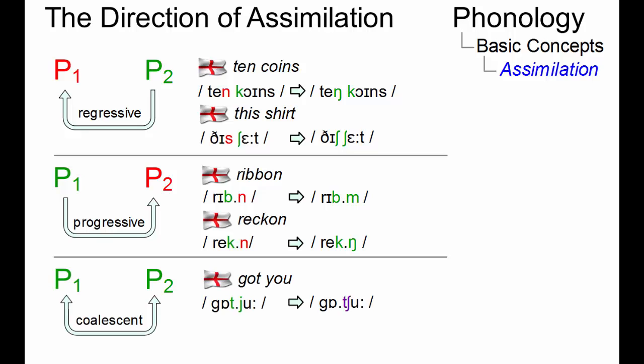In examples of coalescent assimilation, as in present-day English got you, which may become gotcha, two adjacent phonemes unite and fuse into one.